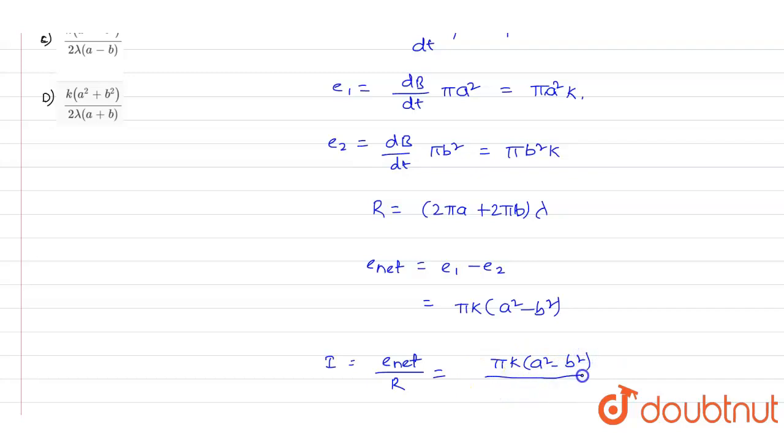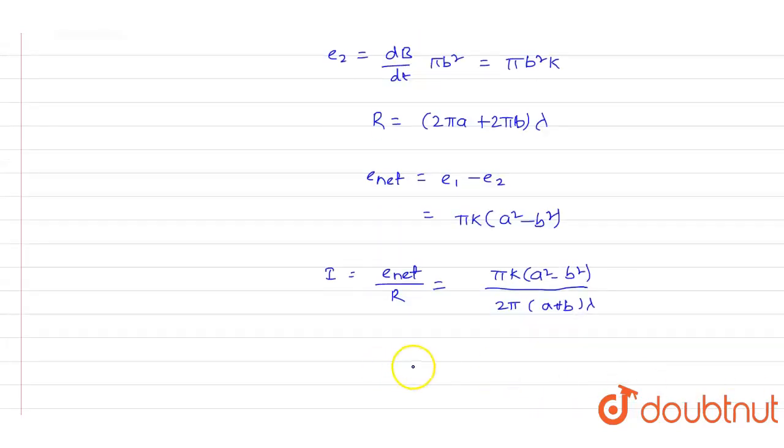this will be divided by the resistance value 2π(a + b)λ. We get the current value as k(a - b)/(2λ).